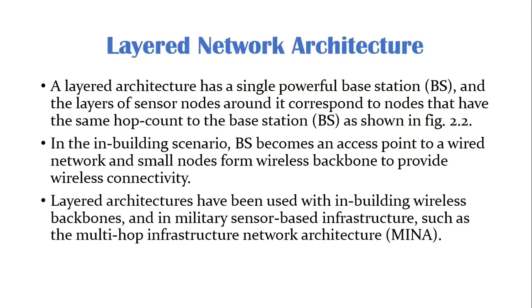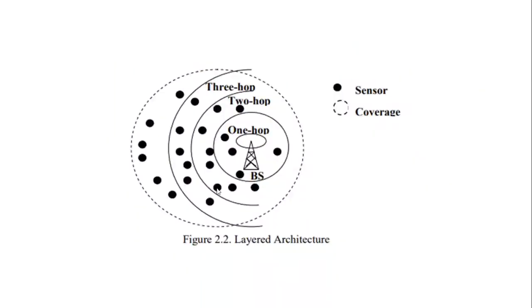The first one is layered network architecture. A layered architecture has a single powerful base station and the layers of sensor nodes around it correspond to nodes that have the same hop count to the base station. In the in-building scenario, base station becomes an access point to a wired network and small nodes form a wireless backbone to provide wireless connectivity. Layered architecture has been used in in-building wireless backbones and in military sensor-based infrastructure such as multi-hop infrastructure network architecture. If you can see this diagram, this is a single base station, these are the sensor nodes, and this is a one-hop layer. Here the sensor node directly communicates with the base station. This is a two-hop layer, this is a three-hop layer.